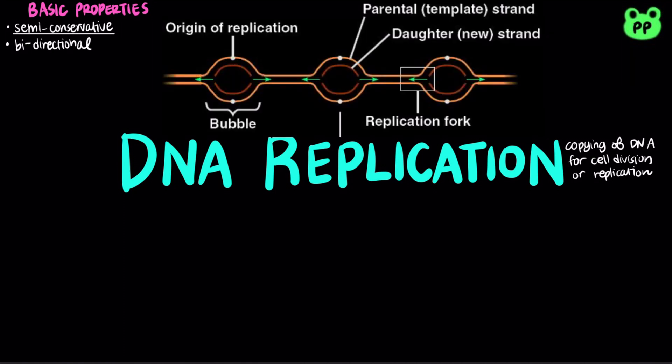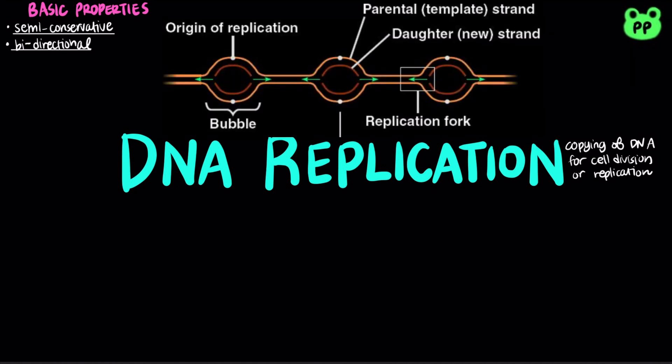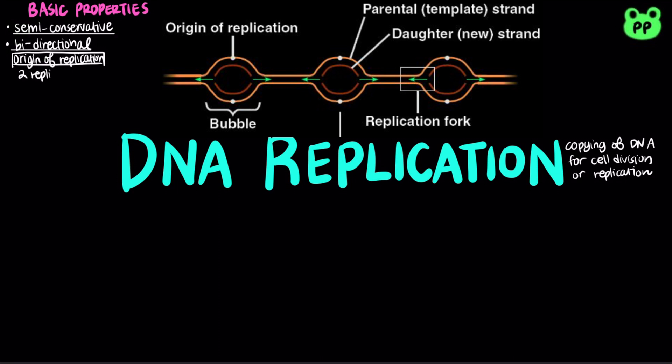DNA replication is also bidirectional. It begins at a special site called the origin of replication which forms a replication bubble with two Y-shaped regions called the replication forks, where the parental strands of DNA are being unwound. Replication proceeds bidirectionally until forks meet on the other side, resulting in two daughter DNA molecules.